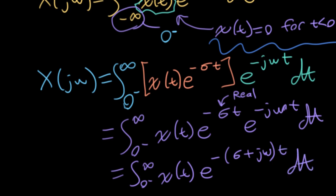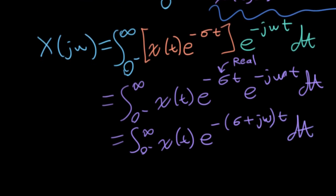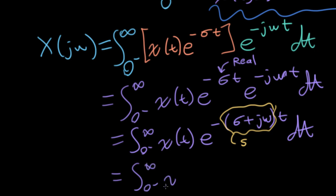What do I have in the exponent here? I have a complex number. It has a real part that's sigma, and it has an imaginary part that's omega. It would be awfully convenient to call this something — let's call it s. So I'll write this as the integral of x of t against a generic e to the minus st, dt.